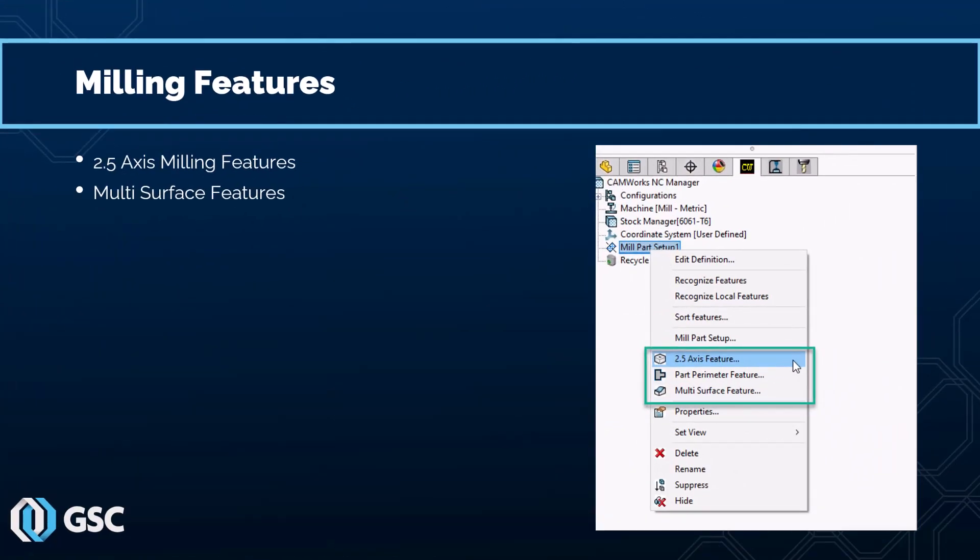In SOLIDWORKS CAM, there are two different types of machinable milling features that you can define: two-and-a-half axis milling features and multi-surface features. Two-and-a-half axis milling features are essentially simple prismatic features where the top and bottom of the feature are parallel and flat to your mill part setup — think pockets, holes, slots. Multi-surface features are features that contain complex multi-directional surfaces, such as organic shapes or the inside of a mold where there are no sharp edges. That would be considered a multi-surface feature.